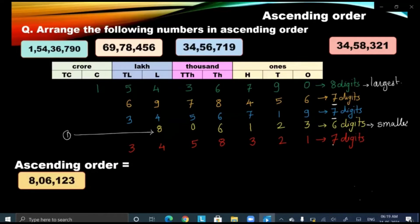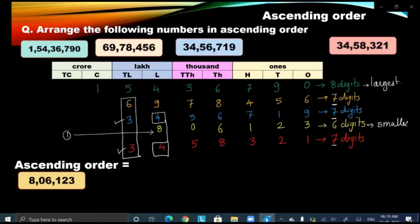Now to decide the second place, we have three numbers which are all seven-digit numbers. Let us compare the first column, which is the 10 lakh column of these three numbers. In this column we got six and three. Comparing six and three, three is the smaller number. But we have two numbers which have three in the starting column, so we will consider the next column — the lakh column. In the lakh column we got four and four, the same number.